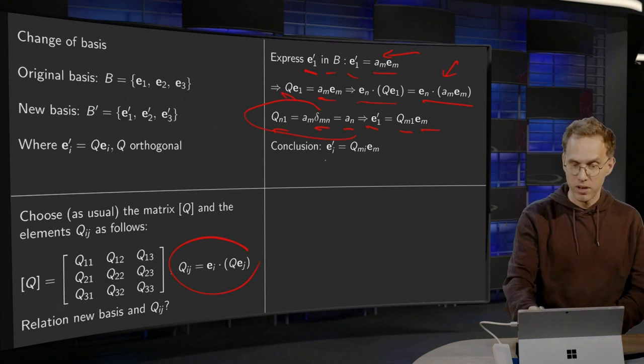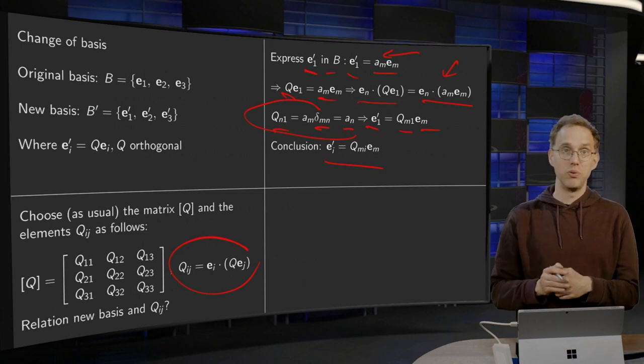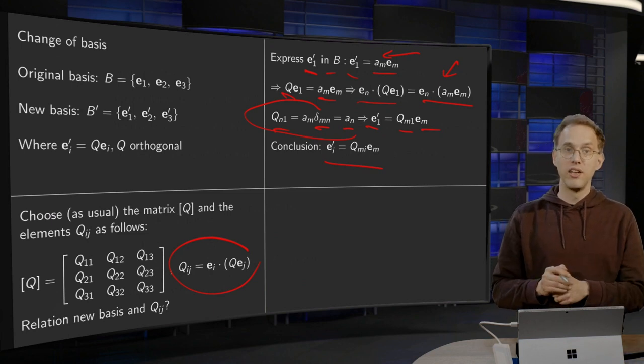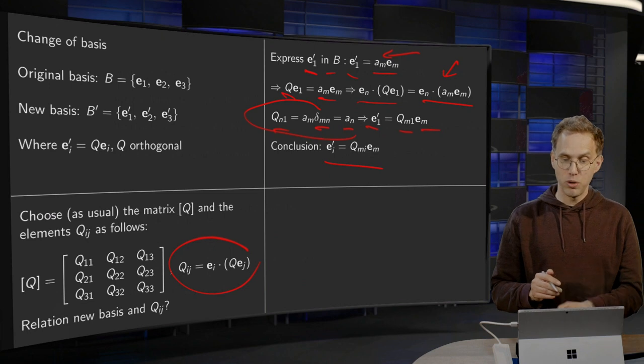And more generally, EI', of course, if you generalize this, if you do this also for 2 and 3, you get EI' = QMI*EM.